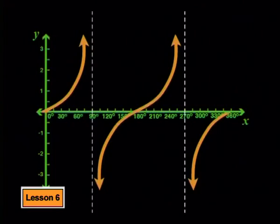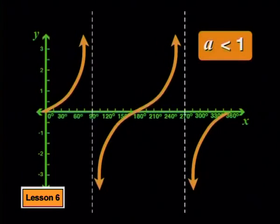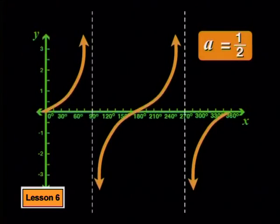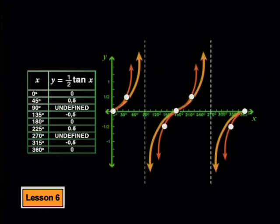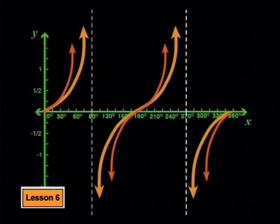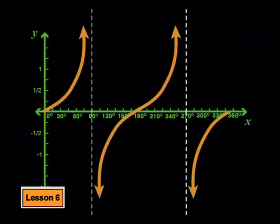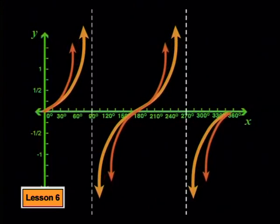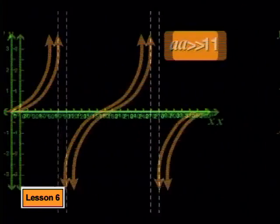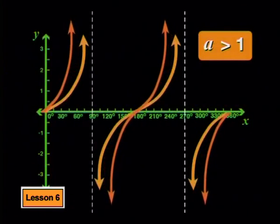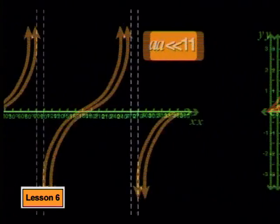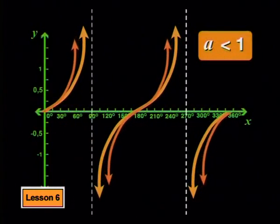What will happen if we choose an a value that is less than 1? Let's choose a equal to a half, so we are multiplying all the y values on the graph by half. Comparing the new points with the parent graph, they will be half the distance away from the x-axis. Joining them gives the graph of y equals a half tan x — it's as if the graph is being pulled towards the x-axis. So increasing the a value stretches the graph away from the x-axis, while decreasing the a value pulls the graph towards the x-axis.